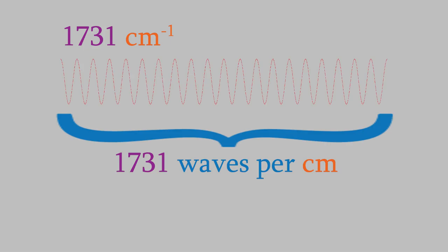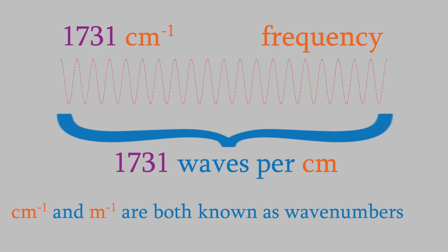First, let's think about the unit our data is in. This unit is telling us that there are 1731 waves per centimeter, which actually makes it a way of expressing the frequency of the wave rather than its wavelength. When we express the frequency in reciprocal centimeters, or reciprocal meters, we often call the unit wavenumbers. Since wavenumbers can use either centimeters or meters, it's important to know which unit we're using when you see the word wavenumber. The symbol we use for wavenumbers is the Greek letter nu with a horizontal bar above it.